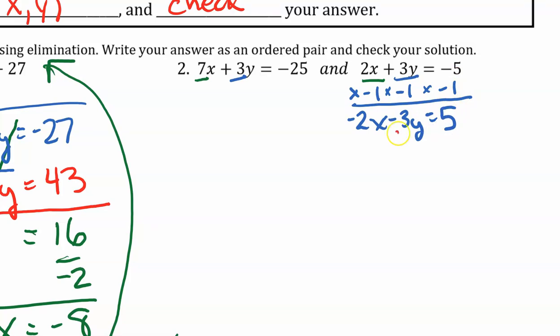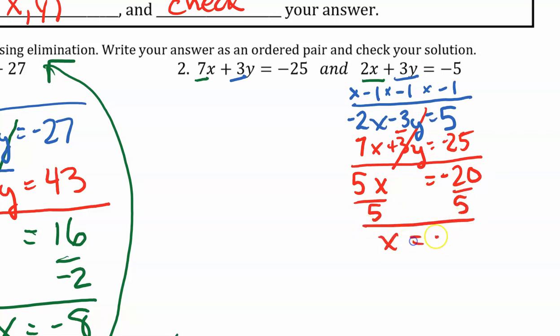Now I have my opposite coefficient. So I'm going to write my first equation underneath. I'm going to add these together. Negative 2x plus 7x is 5x. The y's eliminate one another. And 5 minus 25 is negative 20. Solving for x, I'll divide both sides by 5. x equals negative 4.